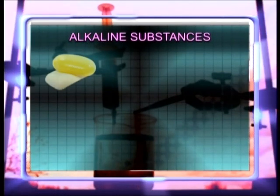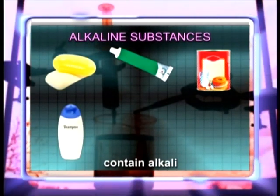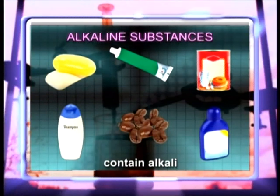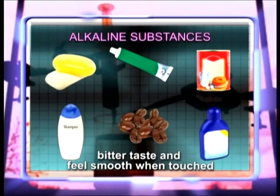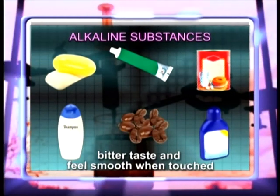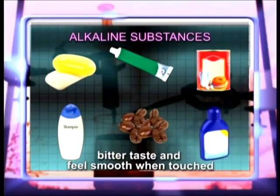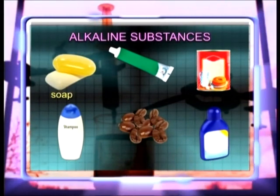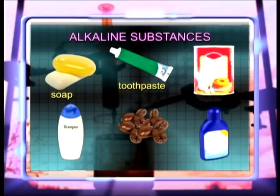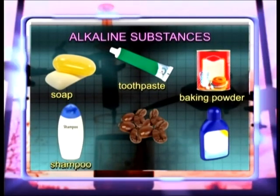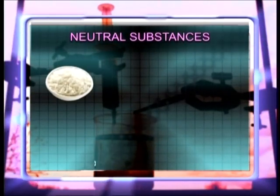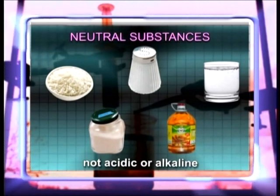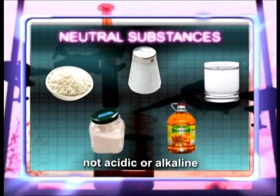Alkaline substances are substances that contain alkaline. Alkaline substances have a bitter taste and also feel smooth when touched. Examples of alkaline substances are soap, toothpaste, baking powder, shampoo, coffee, and magnesia milk.